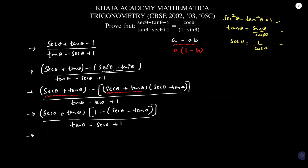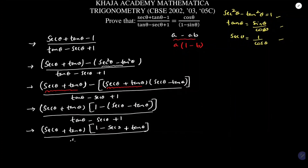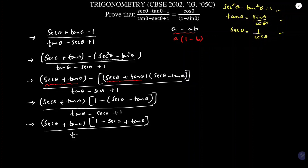Simplifying the bracket: 1 - sec θ + tan θ. So the numerator is (sec θ + tan θ)(1 - sec θ + tan θ) and the denominator is tan θ - sec θ + 1. Observing both terms: tan θ - sec θ + 1 and 1 - sec θ + tan θ are the same. So these two terms cancel.